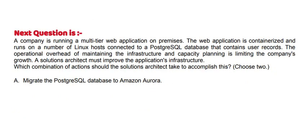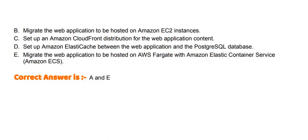Next question: A company is running a multi-tier web application on-premises. The web application is containerized and runs on a number of Linux hosts connected to a PostgreSQL database that contains user records. The operational overhead of maintaining the infrastructure and capacity planning is limiting the company's growth. A solutions architect must improve the application's infrastructure. Which combination of actions should the solutions architect take to accomplish this? Choose two.